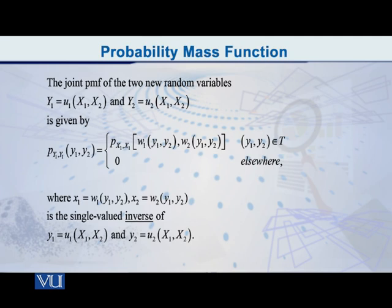In this you must understand very importantly that w1 of y1, y2 is x1 and w2 of y1, y2 is x2. Actually, these two together form the single valued inverse of Y1 equal to u1 of X1, X2 and Y2 equal to u2 of X1, X2.